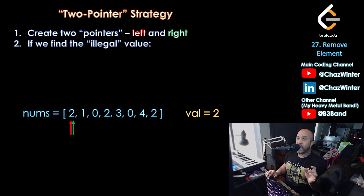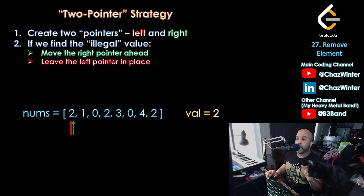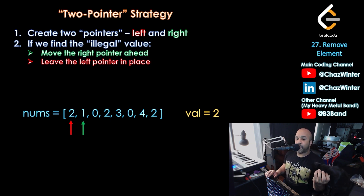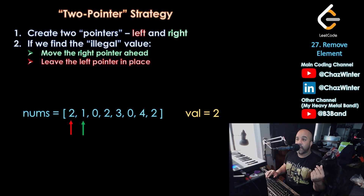If we find the illegal value, the right pointer is the one reading the value. So if that right pointer reads the number 2, we're going to move the right pointer ahead and leave the left pointer in place. This makes sense logically because we're trying to get rid of the 2s, and the left pointer is waiting to copy something — we want to overwrite that 2 with something else, so we just leave it there while it waits.